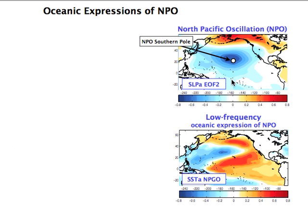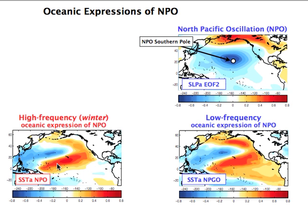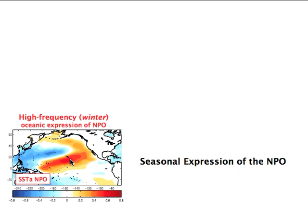In some sense, the NPGO is the low-frequency oceanic expression of the NPO. However, from work by Dan and Bruce, there is also a high-frequency component of the NPGO. This high-frequency component's signature in SST looks like a horseshoe pattern, and this SST signature together with the NPGO is important in terms of ENSO dynamics. I'll refer to this as the seasonal expression of the NPGO.